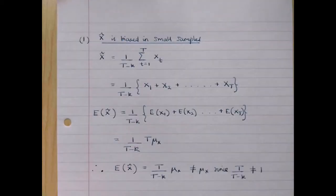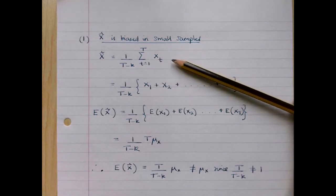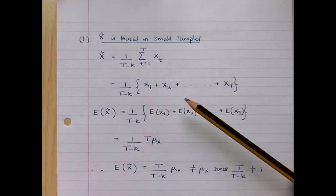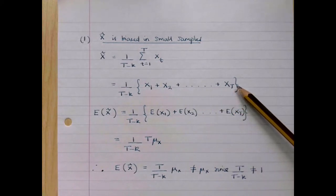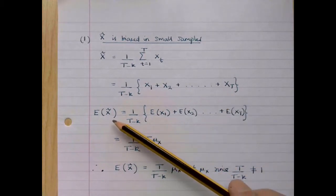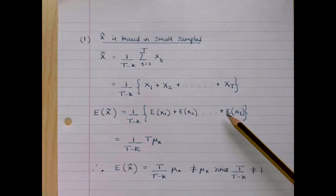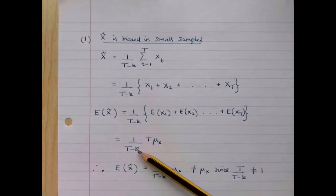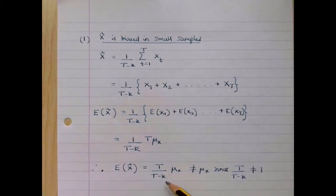x tilde is biased in small samples. We've defined x tilde as 1 over T minus k multiplied by the sum from t equals 1 to capital T of xt. If we expand that expression out, we can write it as 1 over T minus k multiplied by x1 plus x2 etc. up to xT. Now if we take expectations, each one of the x's has expectation mu x. So the expected value of x tilde is 1 over T minus k multiplied by T mu x, which equals T over T minus k times mu x.